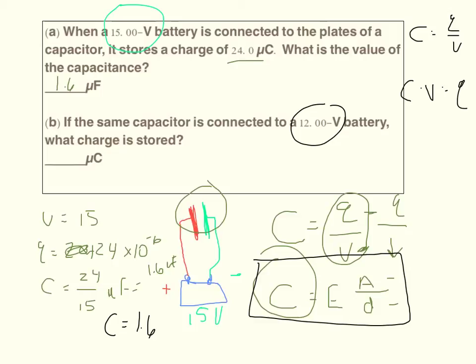And so I get capacitance times voltage is equal to the charge. So the new voltage is 12, so I take 1.6 times 12 and I get that the charge is 19.2, and it's going to be in microcoulombs because I used my microfarads for my capacitance.